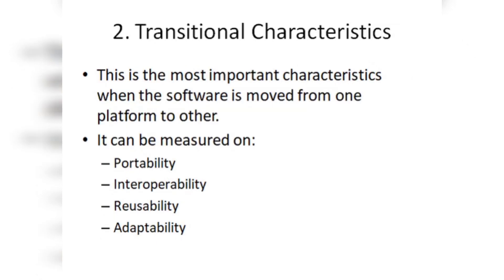Next are your transitional characteristics. This means: from one location to another, from one function to another, how quickly our software will adapt. In transitional characteristics, this can be measured using portability. Portability means: is your software portable? Can it be used on other machines? Yes or no — that defines portability.